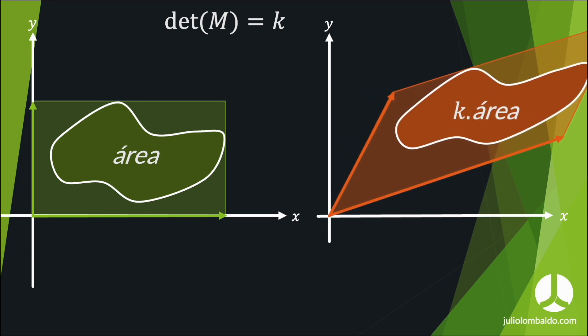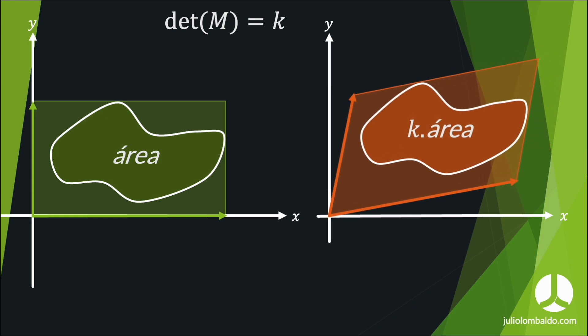When the two vectors are nearly parallel, the area is very small and the determinant approaches zero. When the area is much larger, k is much greater, so the determinant is bigger. This is the geometric relationship between determinants, matrices, and areas — the determinant scales areas by a factor of k.